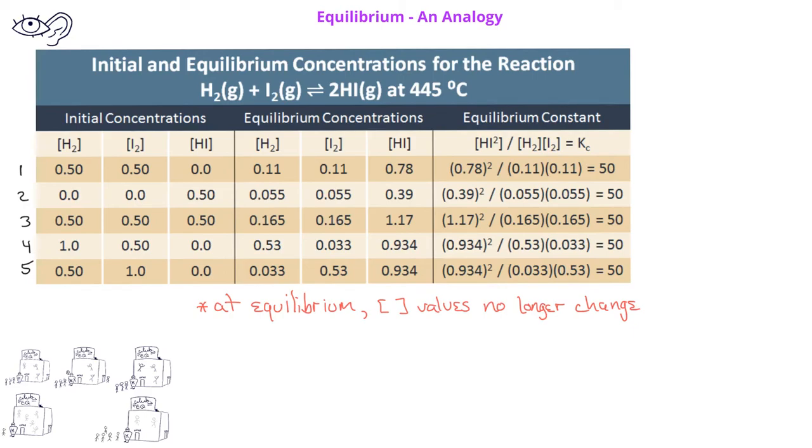When we calculate the equilibrium constant, which again is a ratio of the reactant and product concentrations at equilibrium, we still have a ratio that equals an equilibrium constant of 50.